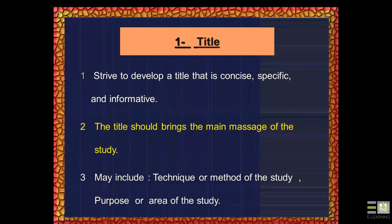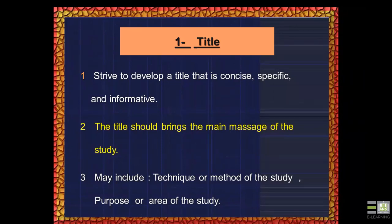The title must be concise, specific, and informative. The more concise and specific, the better. It should bring the main message of the study. The title can include the technique, method of study, purpose, or area of the study. A title with four or five lines is too long — keep it concise, specific, and informative.